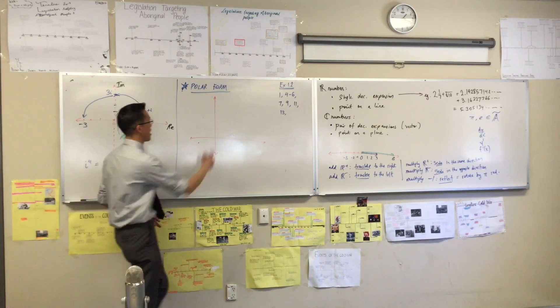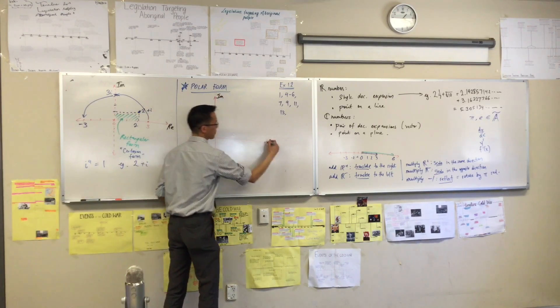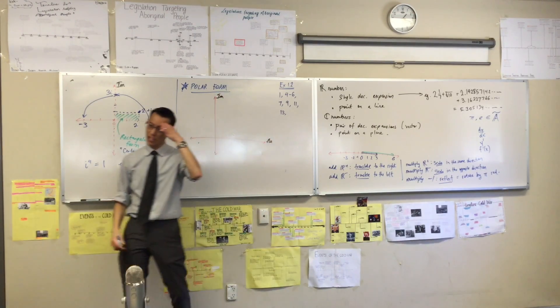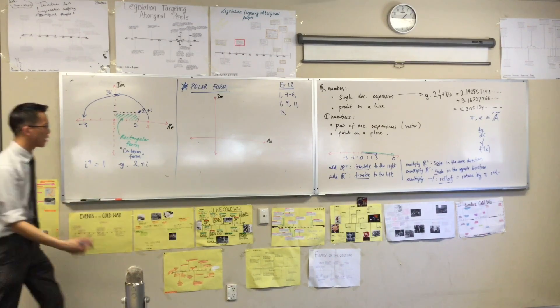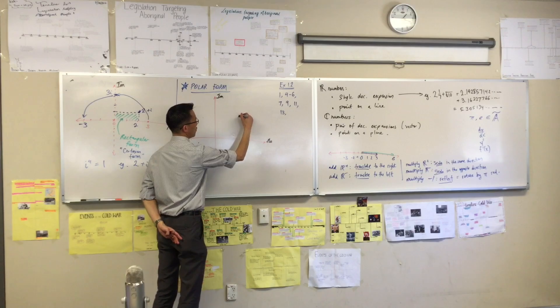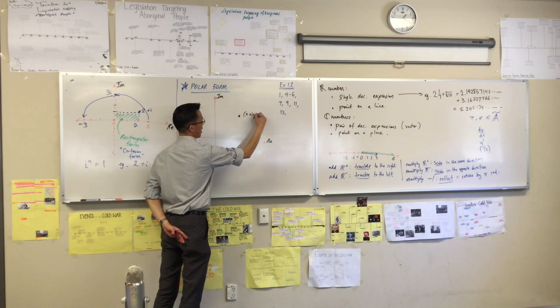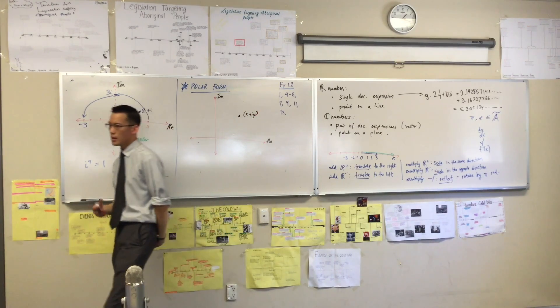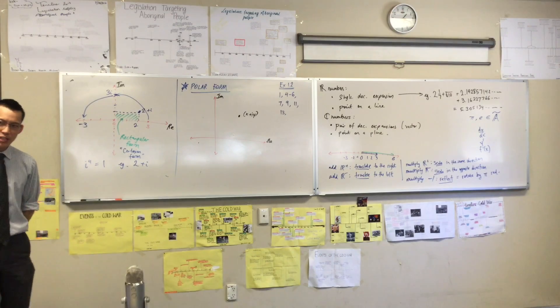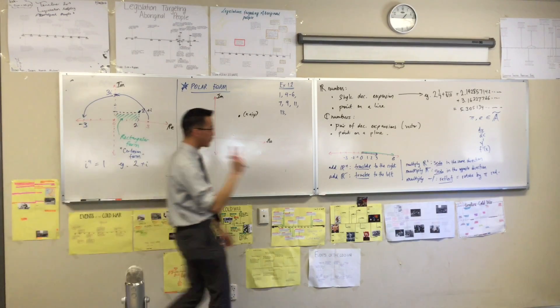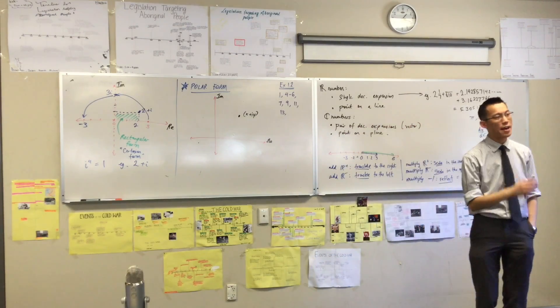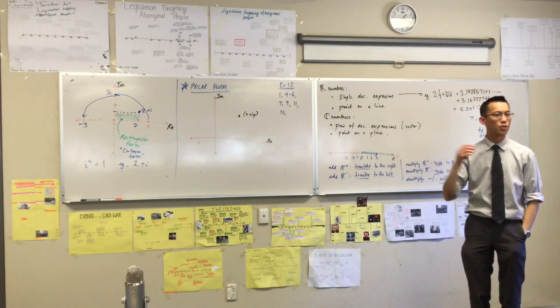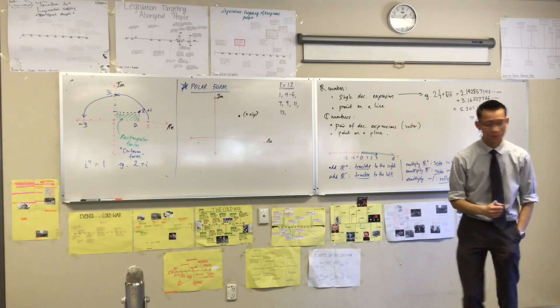Now, on this new argand diagram, and again, let's make sure we represent the imaginary part and the real part and label them as such. Let's pick out a point. And if I call this guy over here x plus iy, right, I can represent this in a different way using a different pair of decimal expansions, a different pair of numbers, if I imagine this point on the circumference of a circle.